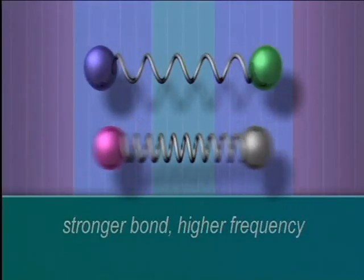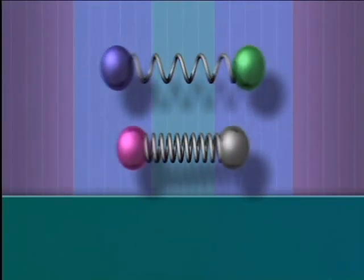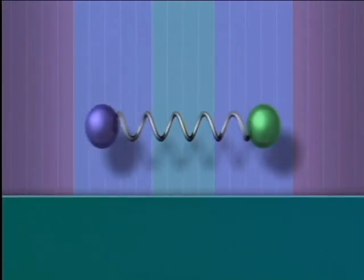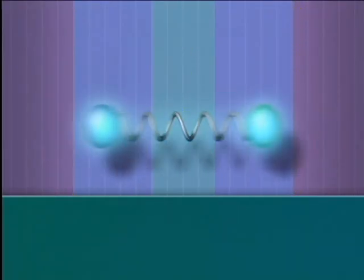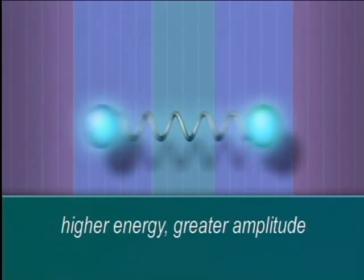At room temperature, most bonds will vibrate with the lowest possible amount of energy. But if radiation of the right frequency is supplied, the bond can absorb energy and vibrate with greater amplitude. Most bonds absorb energy in the infrared region of the electromagnetic spectrum, which corresponds to heat.